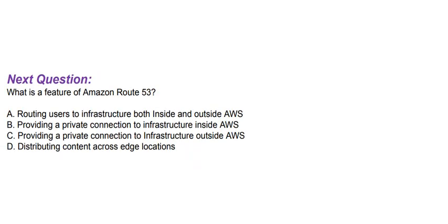Next question: What is a feature of Amazon Route 53? Option A: Routing users to infrastructure both inside and outside AWS. Option B: Providing a private connection to infrastructure inside AWS. Option D: Distributing content across edge locations.